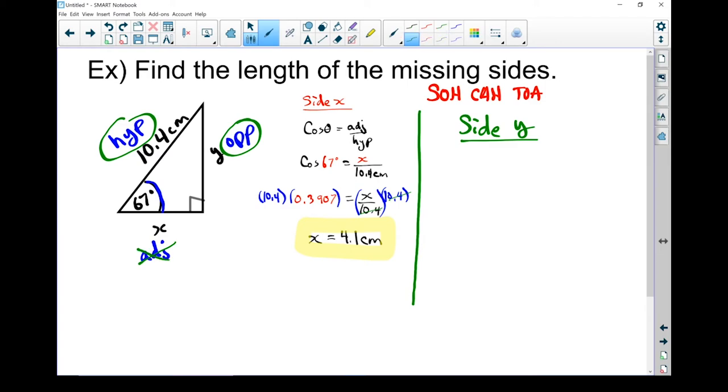Anything with the adjacent isn't useful to us. Cosine has adjacent side. Tan has adjacent side. Sine is the only one that uses both opposite and hypotenuse. That's the ratio I'm going to use. Let's write a formula out.